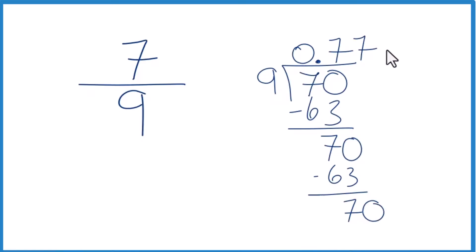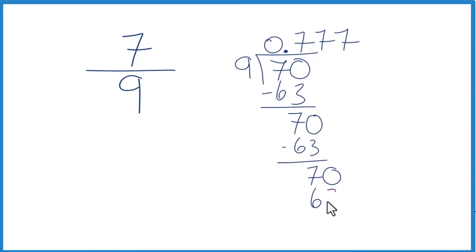Let's call it 70 and move over 1. And again, 7 times 9, that's 63. So you can see it's just going to keep going. We're going to keep ending up with 7.